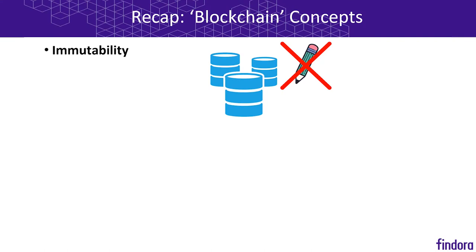We will begin by recapping some of the key blockchain concepts from last week. The first one is immutability. Immutability says that once something is written to a blockchain, it can never be changed. So for example, if I issued a transaction sending 5 Bitcoin to you, I cannot later change it to say that I really sent you only 2 Bitcoin.